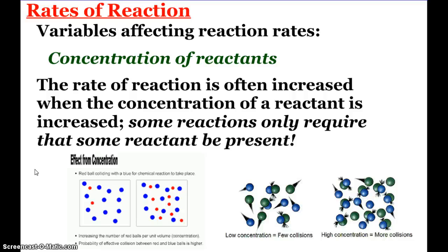You can see that pictured on the right. If we have a low concentration, less collisions. High concentration, more collisions, which we'll see typically has a tie-in to forming more products. Although some reactions only require that a little bit of a reactant be present, and it's not going to affect the rate depending on that particular reactant's concentration.